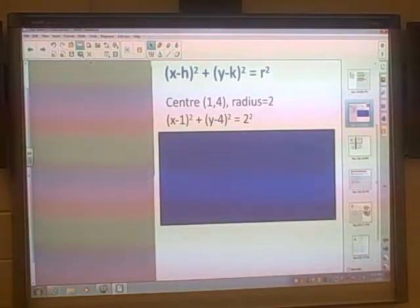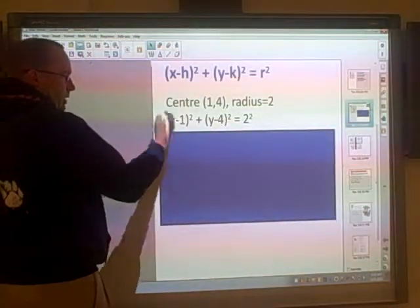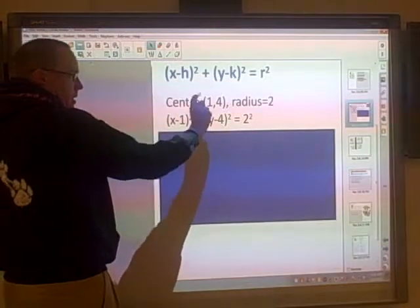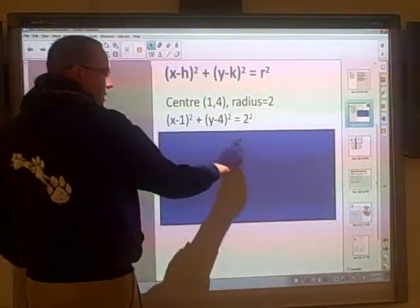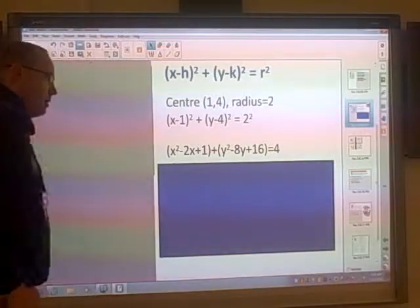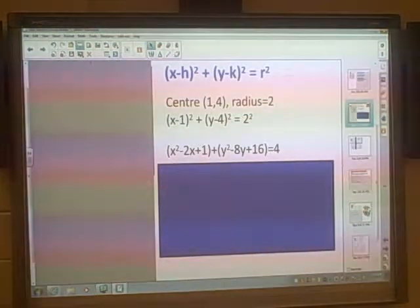Now, what I'm going to do is I'm going to start multiplying terms out. So this time I'm going to do FOIL on, so (x - 1) times (x - 1), (y - 4) times (y - 4), and then 2² is obviously just 4. So just check that you agree with those steps there.